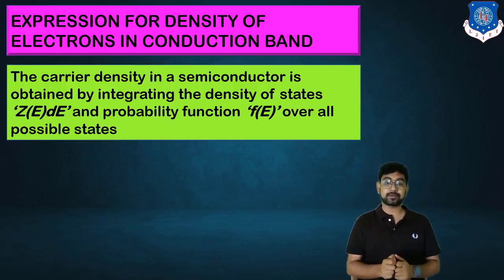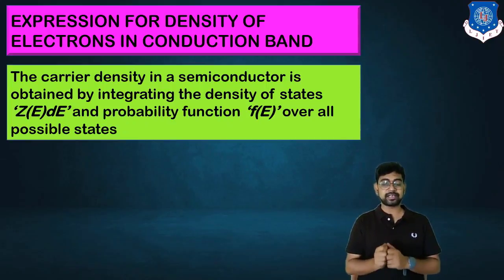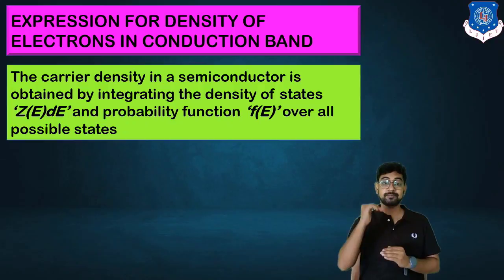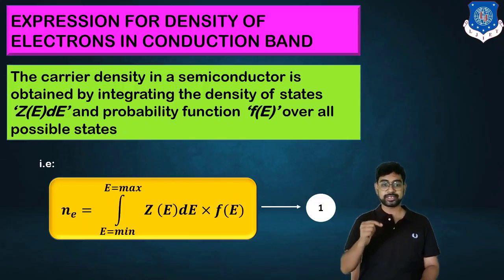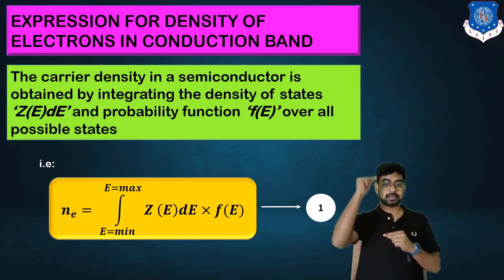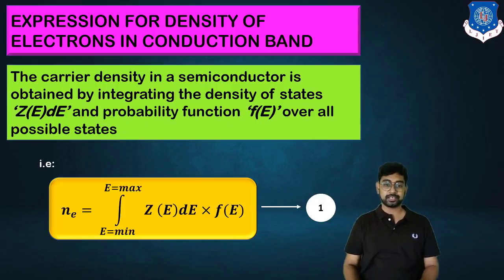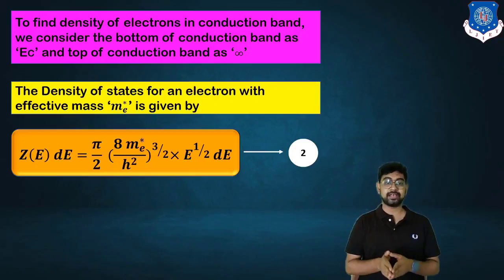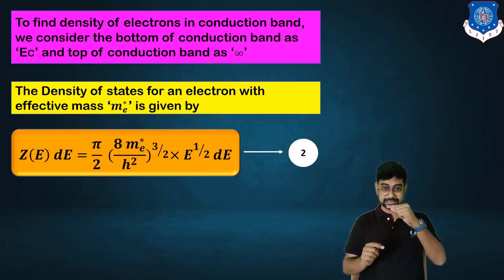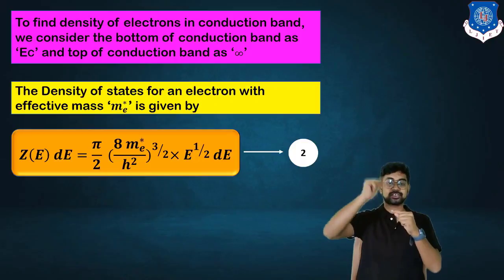The carrier density in a semiconductor is obtained by integrating the density of states Z(E) multiplied by the probability function F(E). Z(E) is the number of available states, and F(E) is the probability function for the presence of electrons. So n_e equals the integration from E_C to infinity of Z(E)·F(E). To find the density of electrons in the conduction band, we consider the bottom E_C as the lower limit and infinity as the upper limit.